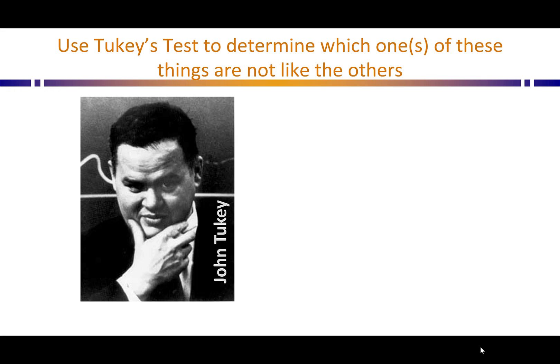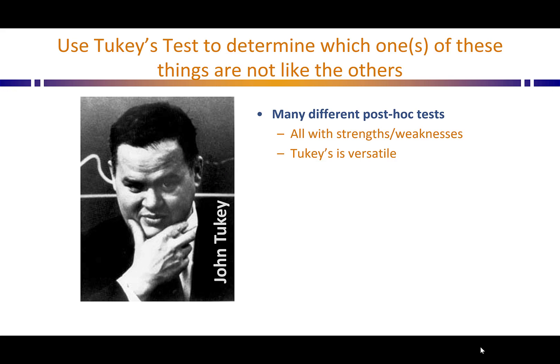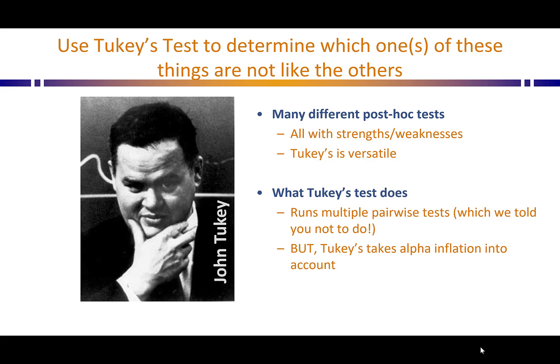It turns out it's not Cookie Monster, but John Tukey who's going to help us answer this question and determine which ones of these things are not like the others. All of these different tests that help you figure out which levels are different from the others for Analysis of Variance are called post-hoc tests. There are a whole bunch of them that come with different strengths and weaknesses. We're using Tukey's because it's a versatile test. What Tukey's does is it runs a whole bunch of pairwise tests between each two levels of your independent variable. We told you not to do this due to alpha inflation, but that's where Tukey's comes in — it accounts for alpha inflation in its analysis.